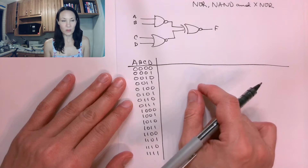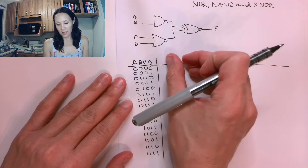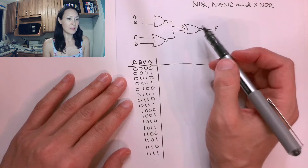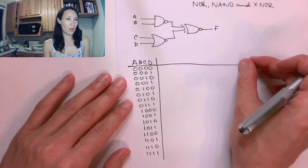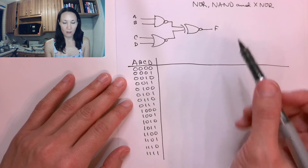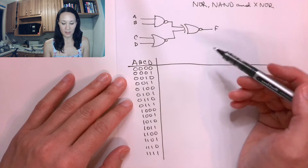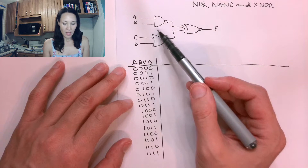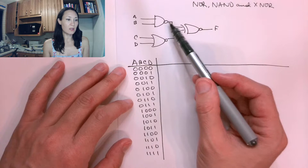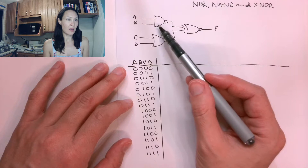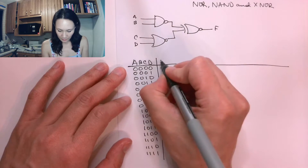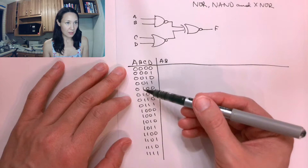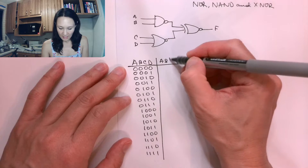Now, technically for our truth table we just have to have all the inputs and then the output that corresponds to all of these combinations. But if I have a circuit like this, I like to put in some extra columns just for myself so that I can keep track of the logic as I'm moving through this circuit. So the first thing I'm going to do is make a column for A and B, and then I can easily invert that column to give me A NAND B. So if I start with A AND B, I just have to look at the inputs on A and B — just these first two columns — and AND them together.